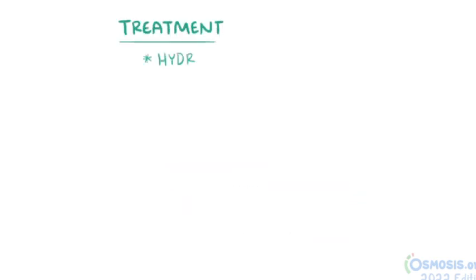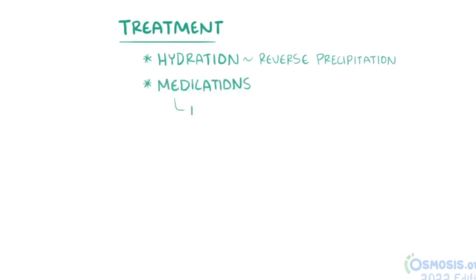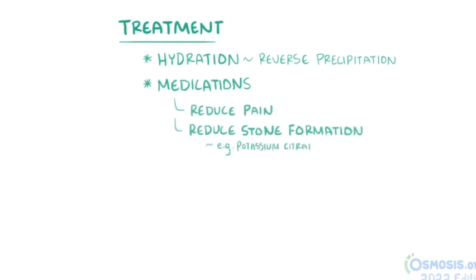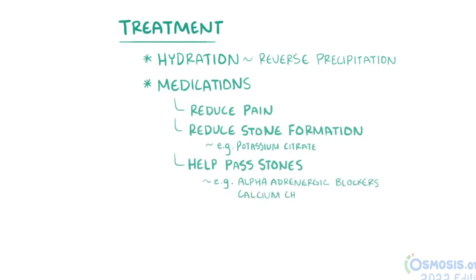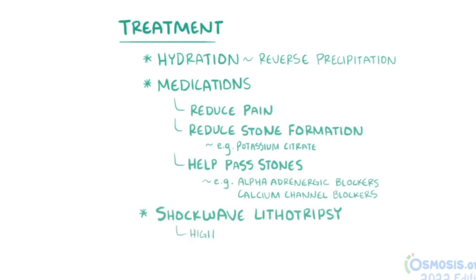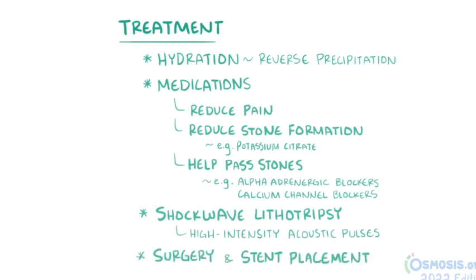Treatment or management includes hydrating an individual to reverse the process of precipitation. Also, medications might be given to help reduce pain, reduce stone formation like potassium citrate, and to help stones pass through, like alpha-adrenergic blockers and calcium channel blockers. Also shockwave lithotripsy might be used, which is a non-invasive treatment that uses high-intensity acoustic pulses that travel through the body to break up the kidney stones. Finally, surgery and stent placement might be needed for larger stones.